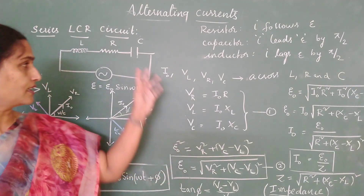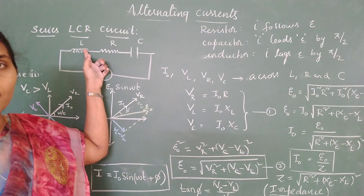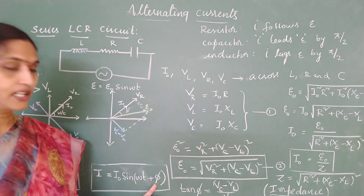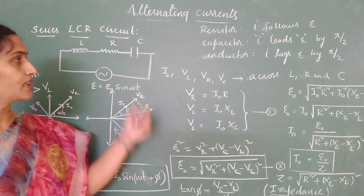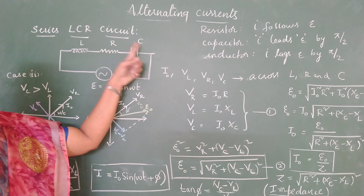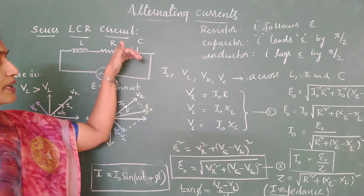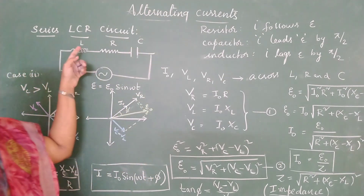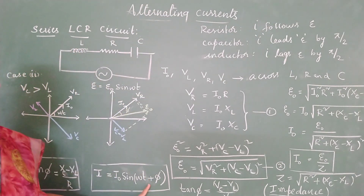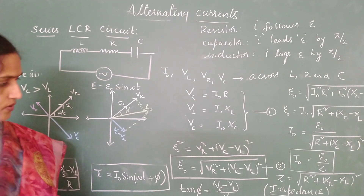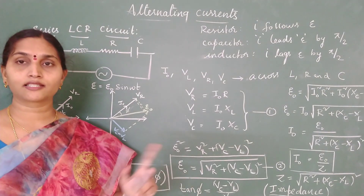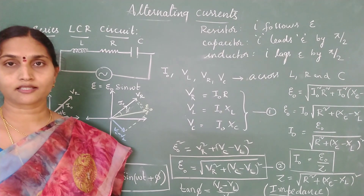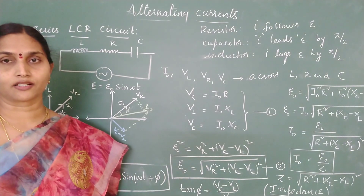So in the first case, when voltage across the inductor is greater than voltage across the capacitor, current was lagging behind by phi. Whereas if voltage across the capacitor is greater than the inductor — whenever the capacitor dominates, current is ahead of EMF; whenever the inductor dominates, current is lagging EMF by phi. Now let us look into case 3, the third case of an LCR circuit.